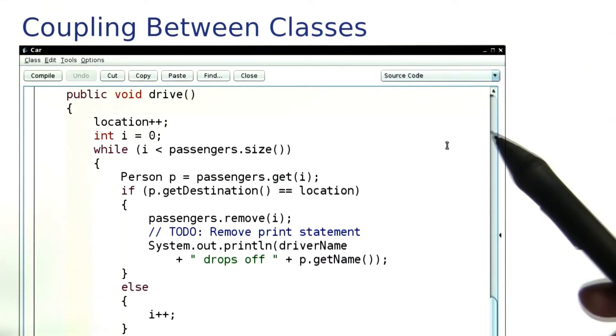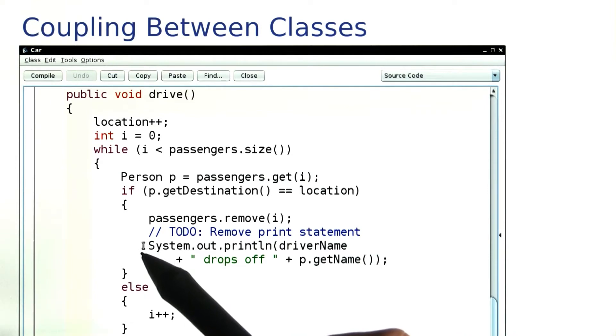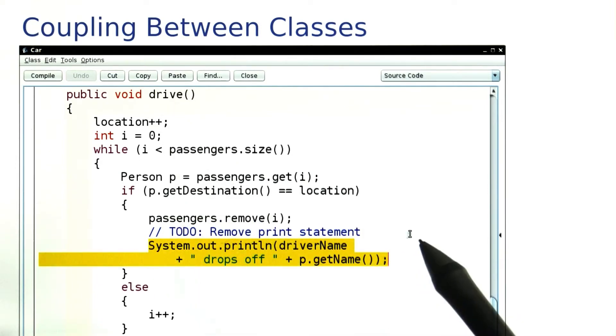Let's finish the job of decoupling the car class from the use of system.out. There's a second print statement in the drive method where we print something out every time that a passenger gets dropped off.